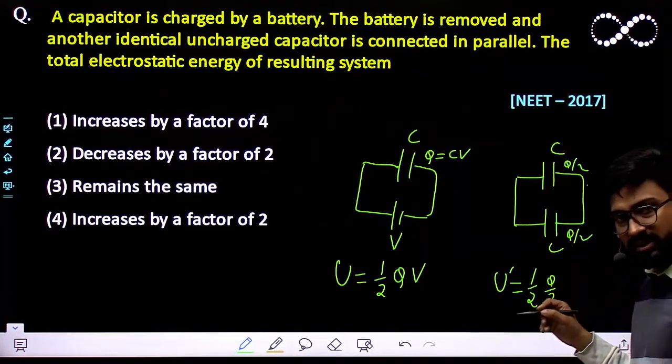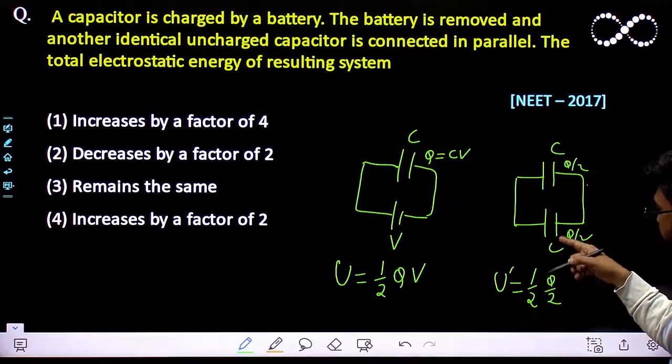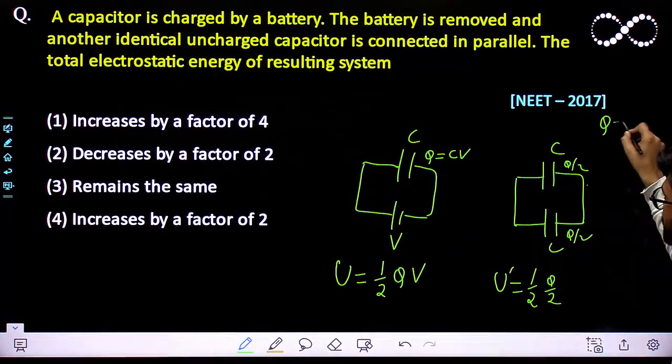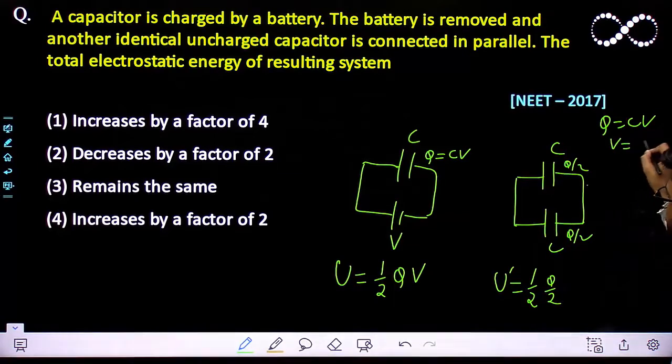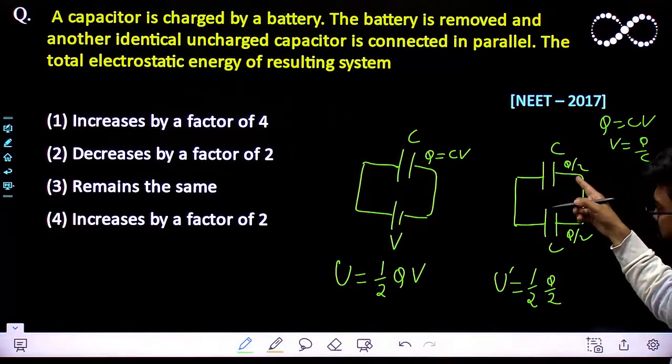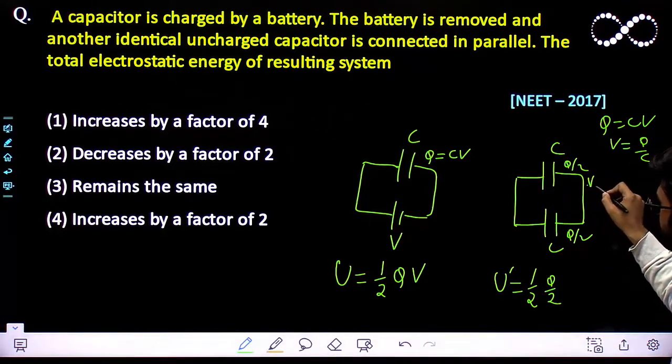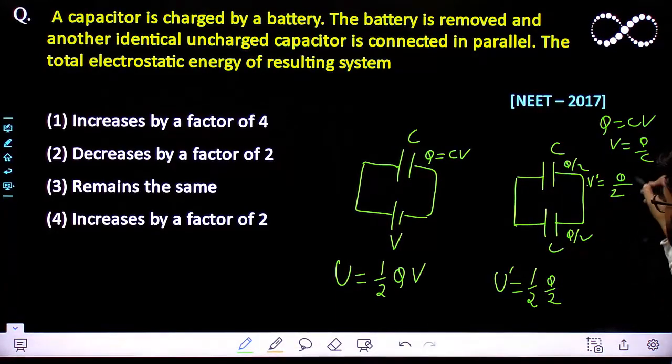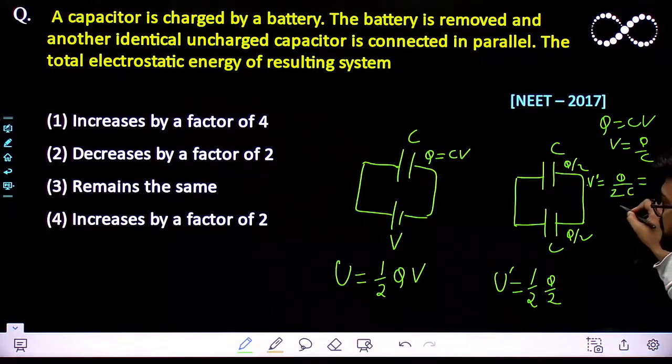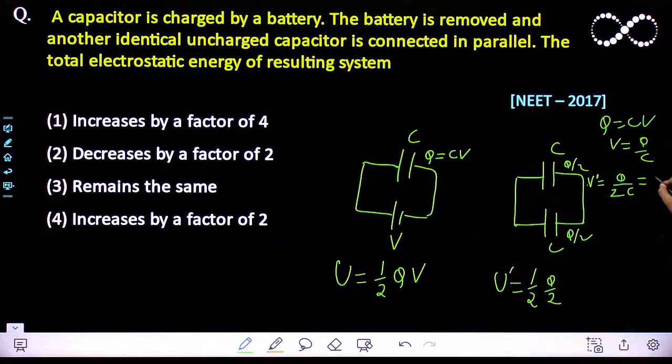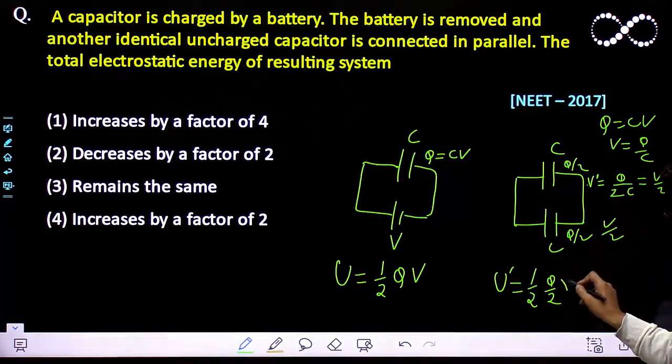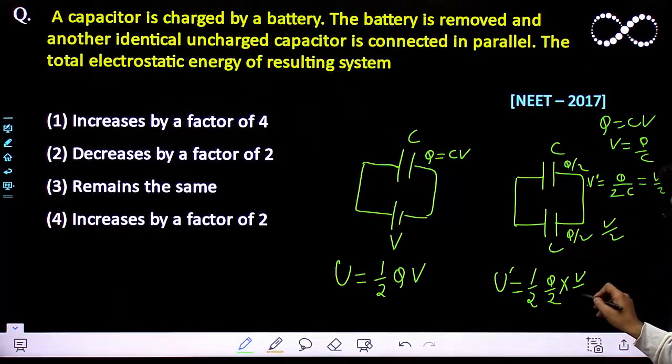So what would be the potential here? We know Q = CV and potential is Q/C. Here the potential V' would be Q/C, which is Q/(2C). Since Q/C is the earlier potential, it would be half of what it was. So the potential is also half: V' = V/2.